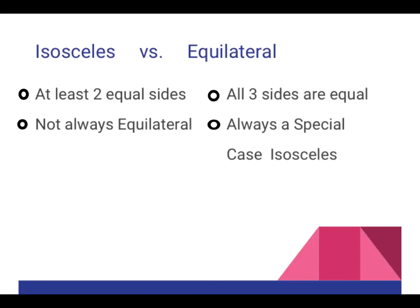Isosceles triangles have at least two equal sides. So an equilateral triangle with three equal sides is a special case isosceles triangle. All equilateral triangles are isosceles triangles, but not all isosceles triangles are equilateral triangles.